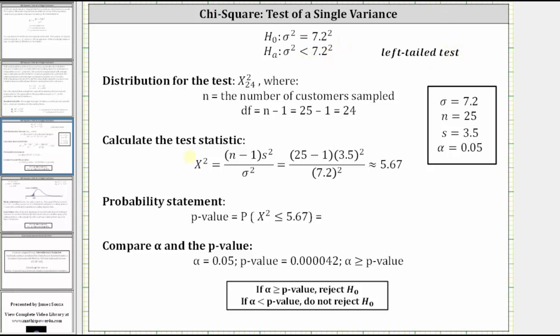Next, we need to calculate chi-square and then the p-value. Using the formula for chi-square, we substitute 25 for n, the square of 3.5 for the sample variance, and the square of 7.2 for the population variance. Let's go ahead and verify this quotient on the calculator.